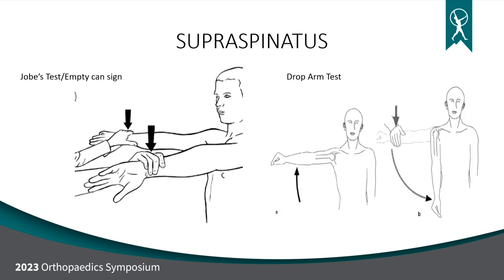Specific tests for individual muscles: for the supraspinatus, the Jobe's test or empty can sign — thumbs down in 30 degrees forward in the plane of the scapula. Patients report pain with rotator cuff inflammation, and weakness if there's a more significant pathology like a partial or full tear. The drop arm test is usually a good sign of a full tear — as you lift their arm, they can no longer support it and it falls back down.